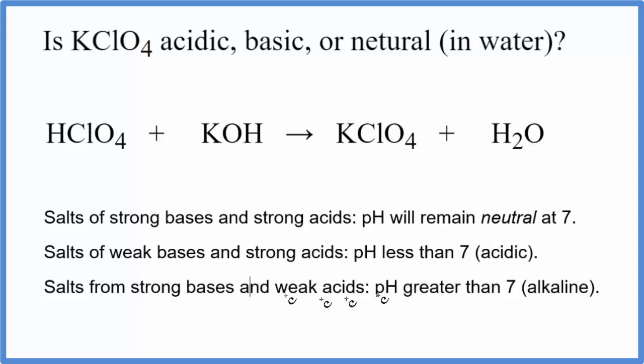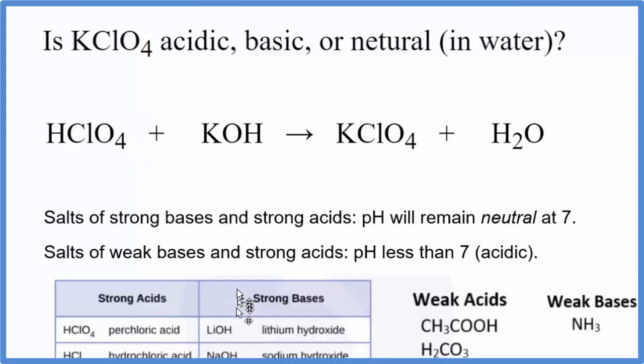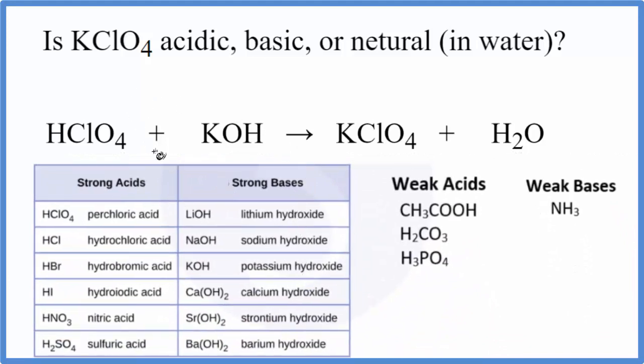To use these rules here, we need to figure out the strength of the acid and the base. To do that, we can use this table here. So on the table, as we look down, HClO4, this perchloric acid right here, that's a strong acid. SA, so we can remember that.